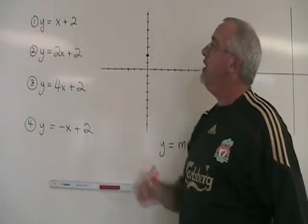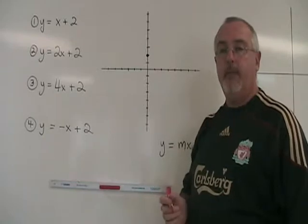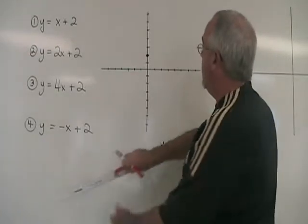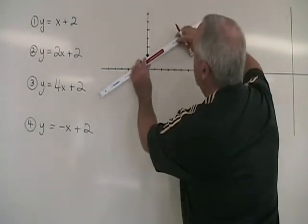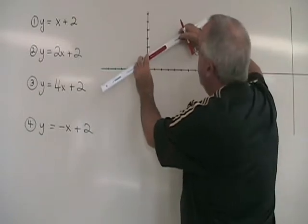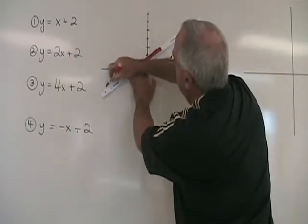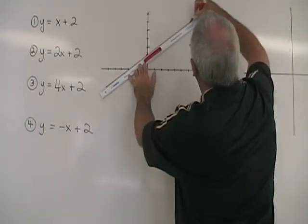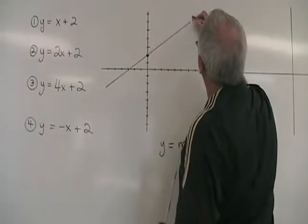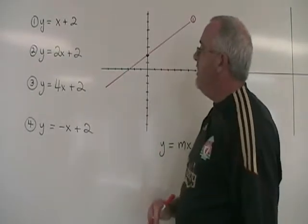In the first equation, the slope m is 1. A line with a slope of 1 forms a 45-degree angle with the x-axis. This is line 1 on the graph.